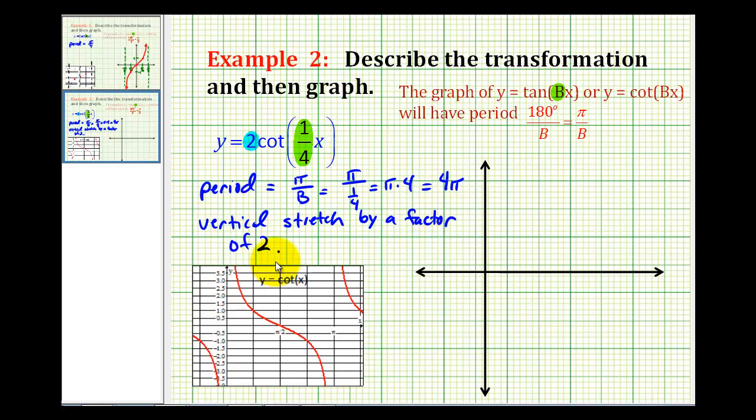Now we should be able to take the information we know about the graph of the basic cotangent function and adjust it based upon this transformation. And this is what I mean by that.